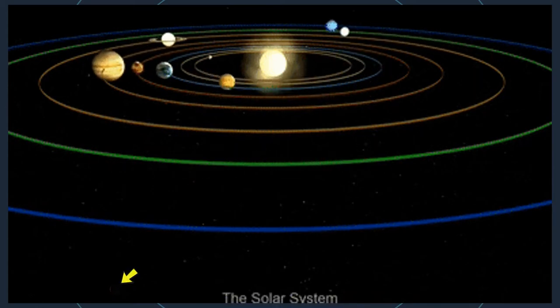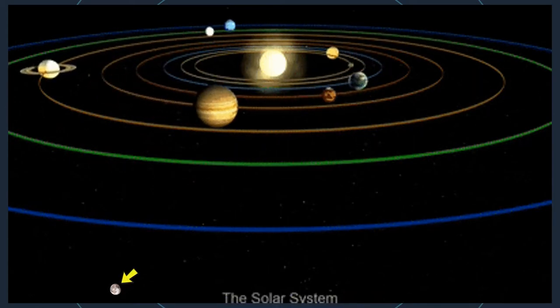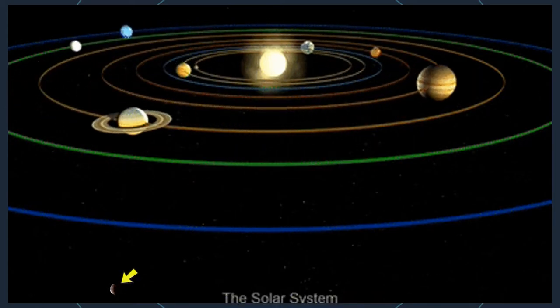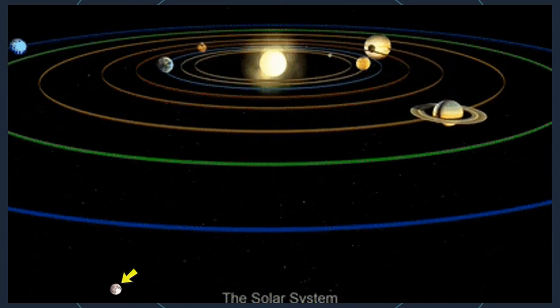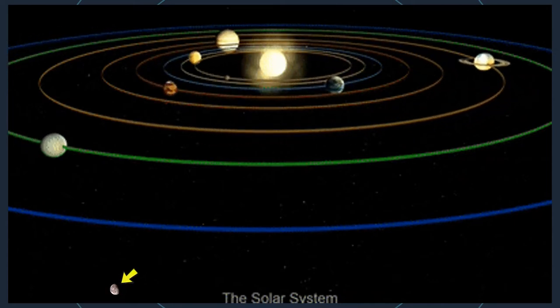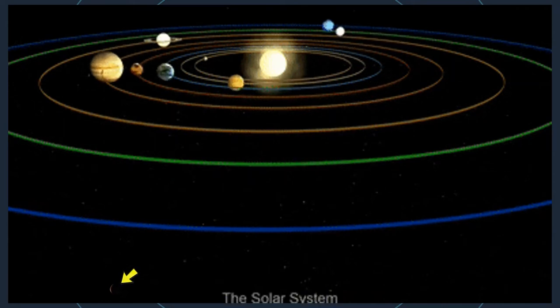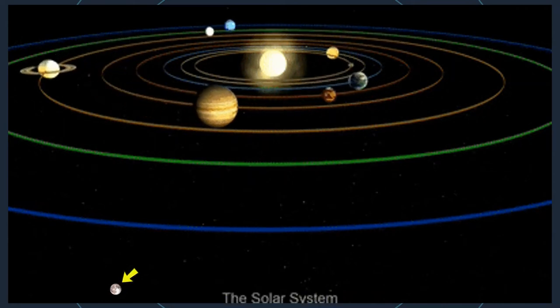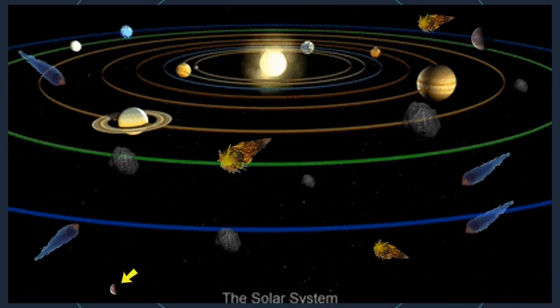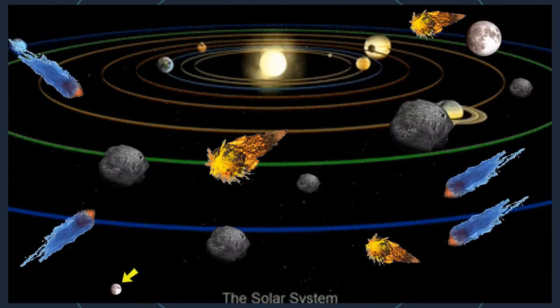Did you remember the last video about solar system? We knew that aside from the inner and outer planets, there are still other objects orbiting around the Sun. Today, we will learn about these objects.